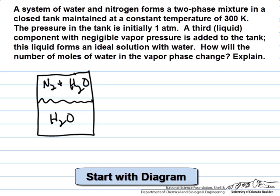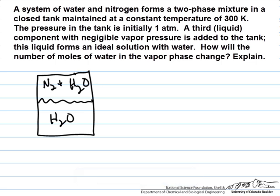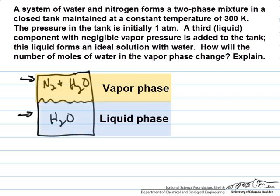We start out with a system that involves nitrogen and water where we assume nitrogen has a negligible concentration in the water under typical conditions of room temperature and one atmosphere. We'll have nitrogen and water in the vapor phase and water in the liquid phase initially.